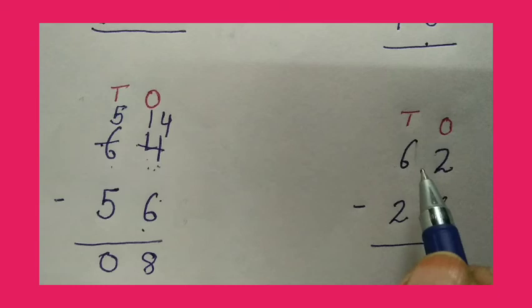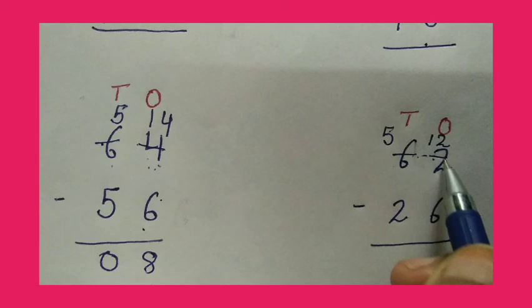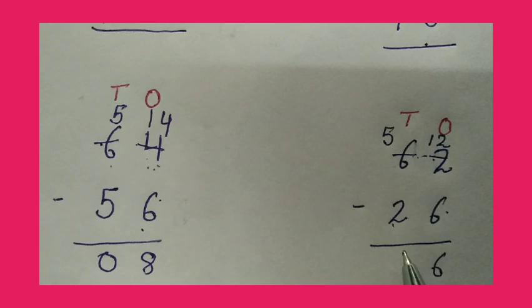We will write here 5. Now we will add 10 to 2, giving us 12. 12 minus 6 is equal to 6. 5 minus 2 is equal to 3.